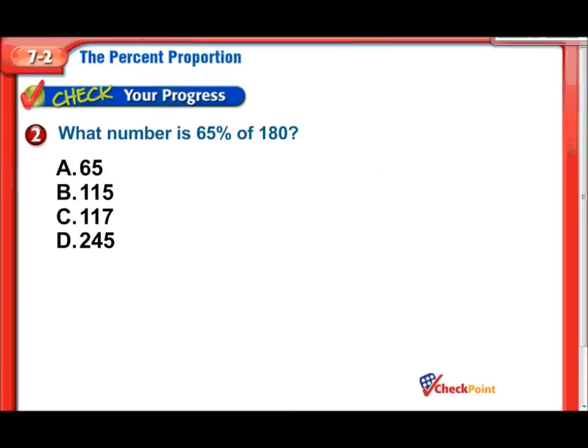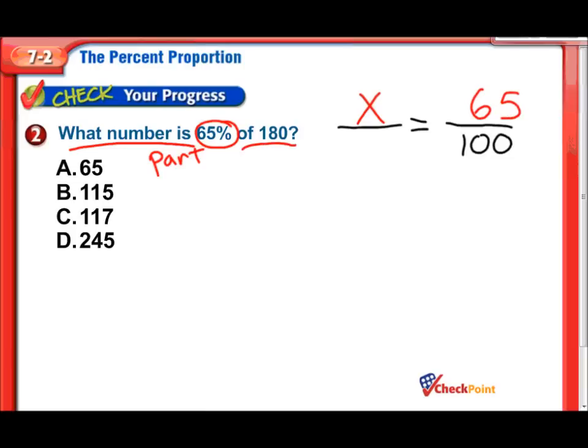New one. What number is 65% of 180? So again, I set up my proportion. Now I start plugging in my numbers where they belong. What number is. So I'm missing the is. Do you remember what that is? That's the part. Whatever is next to the word is, is the part. So in this case, that's the part I'm missing. 65%. As soon as I see that percent, I like to put that right above the 100. Of 180. That of is my whole. And that's going to go right there. Now we're just right back to our cross products and we solve. So 100 times x is 100x.